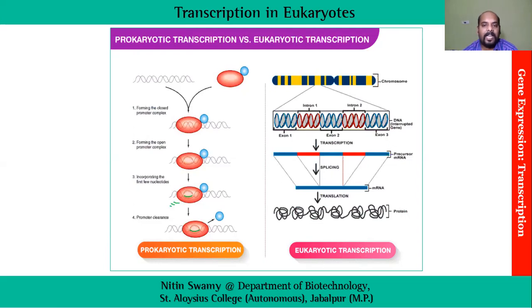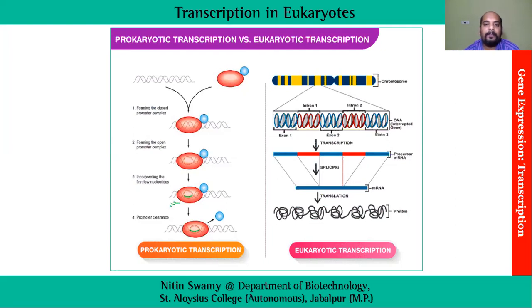If we see both diagrams we'll find that there are some additional steps and some complexities in terms of eukaryotic transcription. After the process of transcription we would have pre-mRNA, not the mature mRNA. For getting matured, the pre-mRNA has to go through many processes such as splicing, polyadenylation, and capping, and after that we would have mature mRNA which would be able to produce proteins.